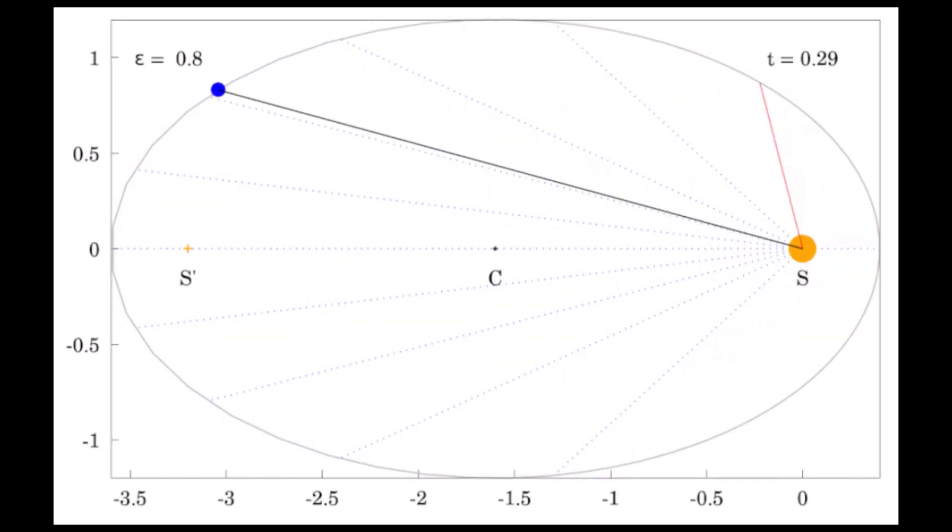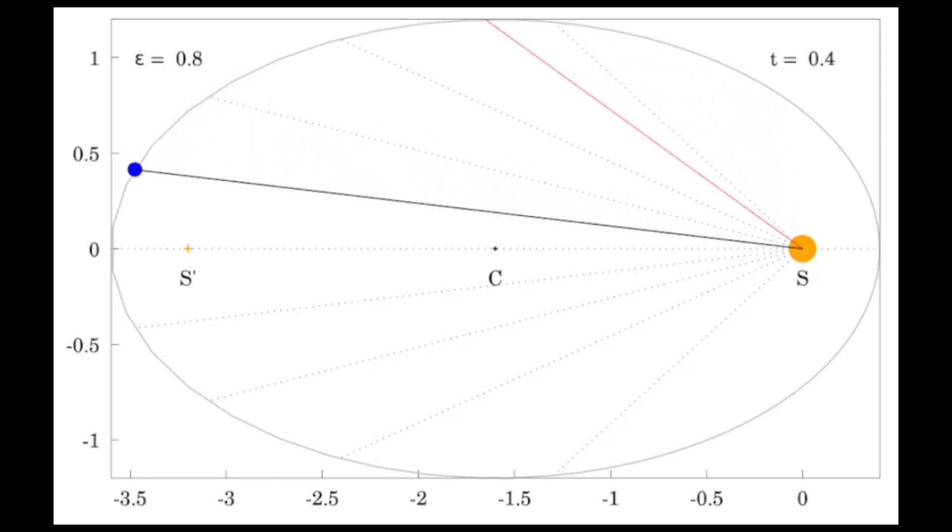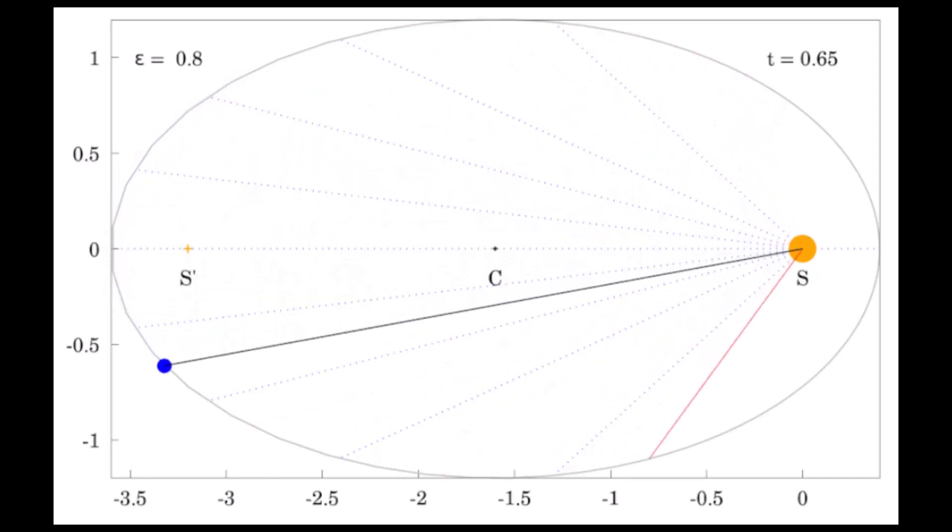So the area swept out in a time interval will cover a larger angle due to the increased orbital speed from stronger gravity, but a smaller length as the distance to the sun is shorter. When a planet is further from the sun, gravity is weaker and its orbital speed is therefore slower. That angle swept out will be smaller, but the distance is greater due to the planet being further from the sun.